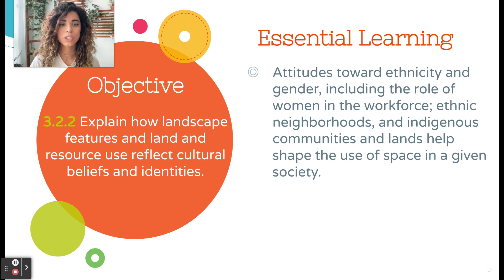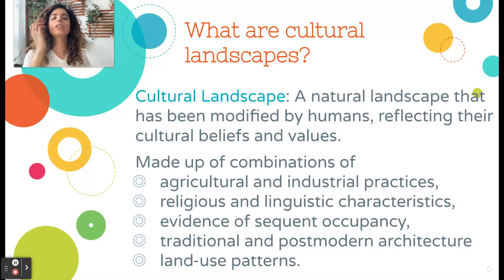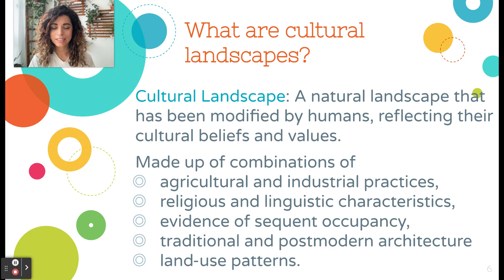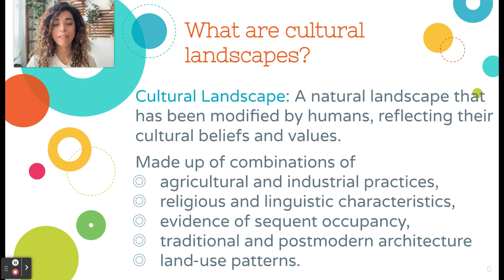The second objective is being able to explain how landscape features and land and resource use reflect cultural beliefs and identities. This includes attitudes toward ethnicity and gender, the roles of women, ethnic neighborhoods, and indigenous communities. A cultural landscape is a natural landscape that has been modified by humans, reflecting their cultural beliefs and values — essentially the human imprint on the space around you.